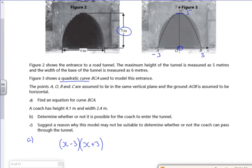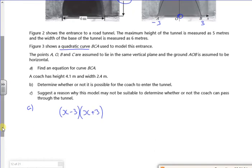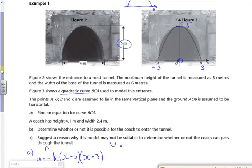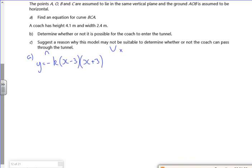5 at the top. Also at the moment I've got a U shape which I don't want, so what I'm going to do, I'm going to put a minus that will make it into an N shape, and I'm going to put a K there. Now I know that the top is zero across and 5 up, so the top of the